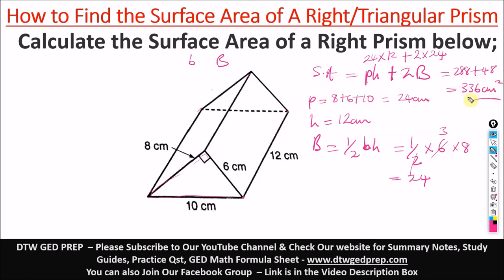So this is the answer. This is how you find the surface area of a right prism using the formula on your GED formula sheet. Thank you for staying tuned to the end of this video. Please don't forget to give this video a thumbs up and subscribe to this channel. Please help us grow.